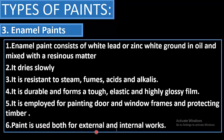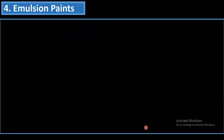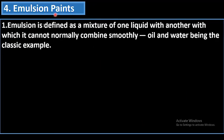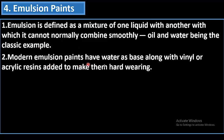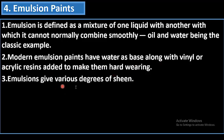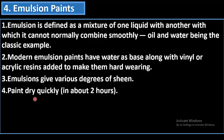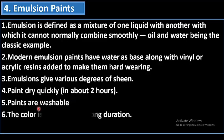Enamel paint is used both for external and internal works. The fourth type is emulsion paint, defined as a mixture of one liquid with another with which it cannot normally combine smoothly — oil and water being the classic example. Modern emulsion paints have water as a base along with vinyl or acrylic resin to make them hard-wearing. They dry quickly in about two hours and are washable, with color retained for a long duration.